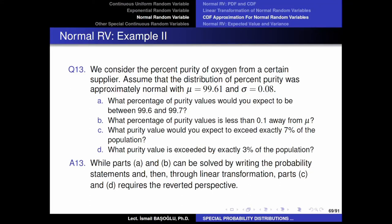We consider the percent purity of oxygen from a certain supply. Imagine we are purchasing oxygen tubes from a supplier and the purity percentage in these oxygen tubes is approximately normal, with location parameter μ equal to 99.61 and scale parameter σ equal to 0.08. In each tube we have approximately close to 100% purity, however just like in all chemicals, not a single chemical is 100% pure.